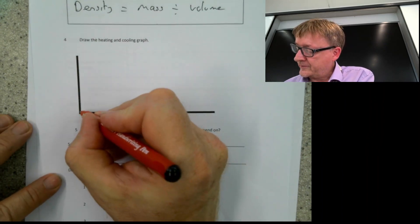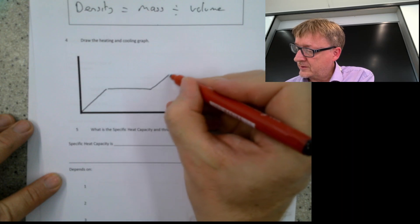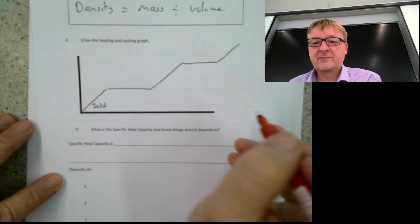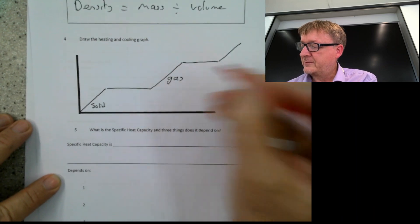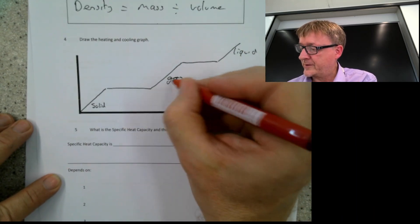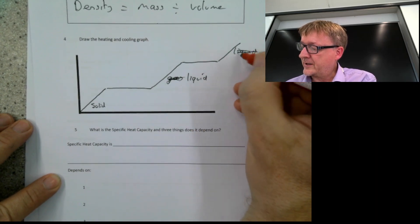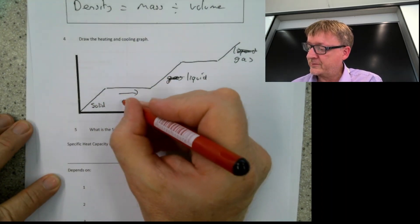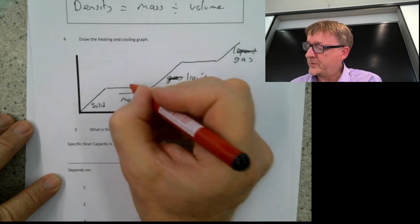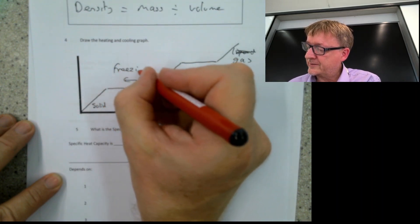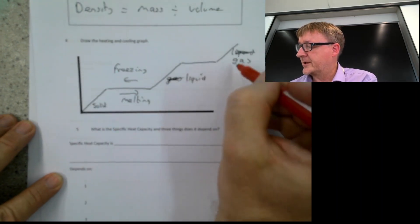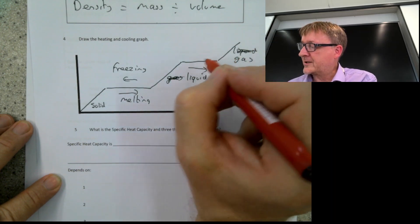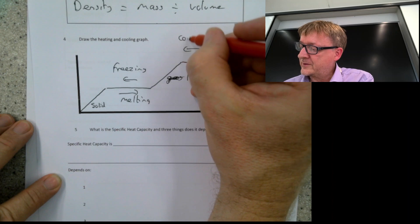Draw a heating and cooling graph. Drawing the axes and lines: that part of the line is a solid, then a liquid, then a gas. Going from solid to liquid in the heating direction is melting; from liquid to solid is freezing. Going from liquid to gas is evaporation; from gas to liquid is condensation. Make sure yours is neater than this one.